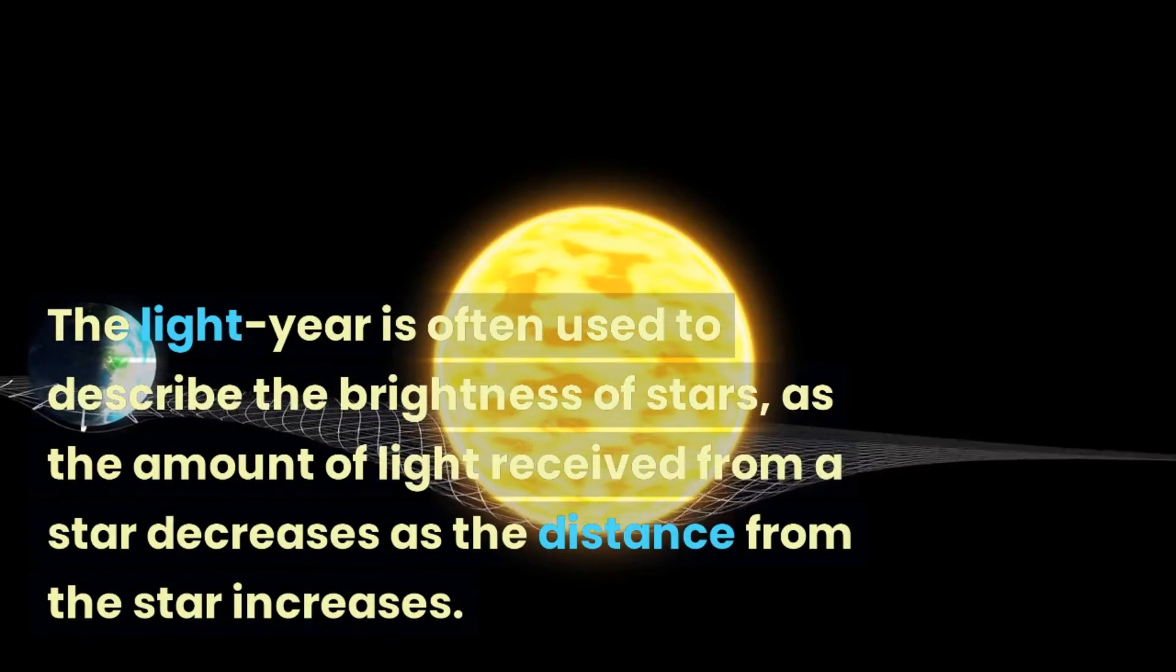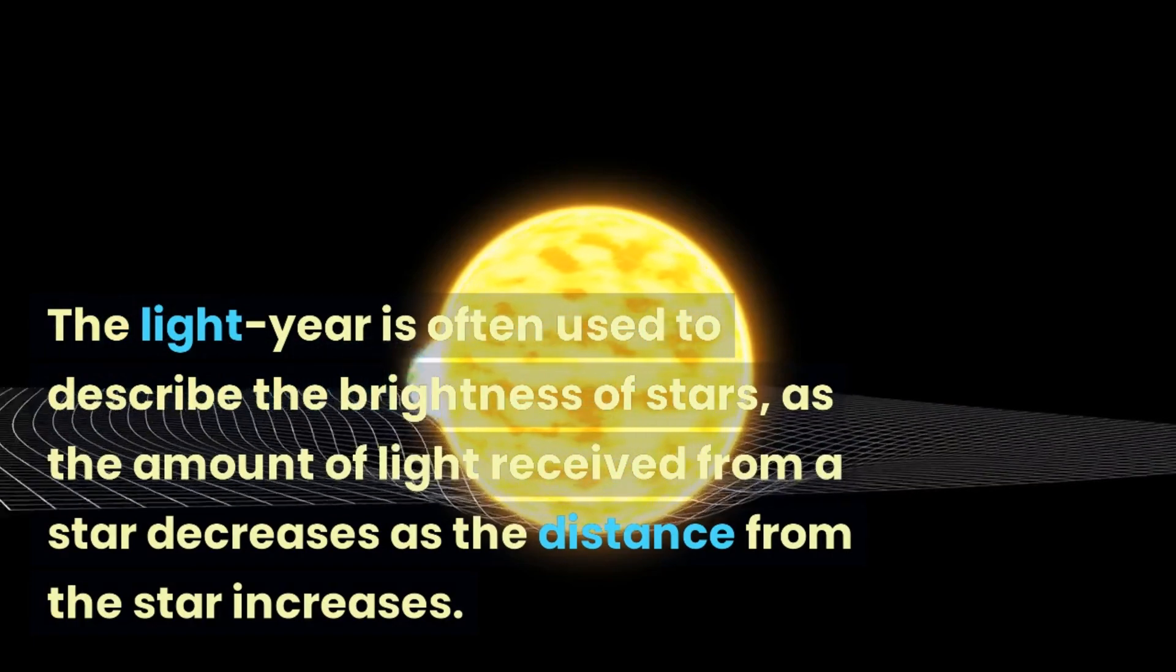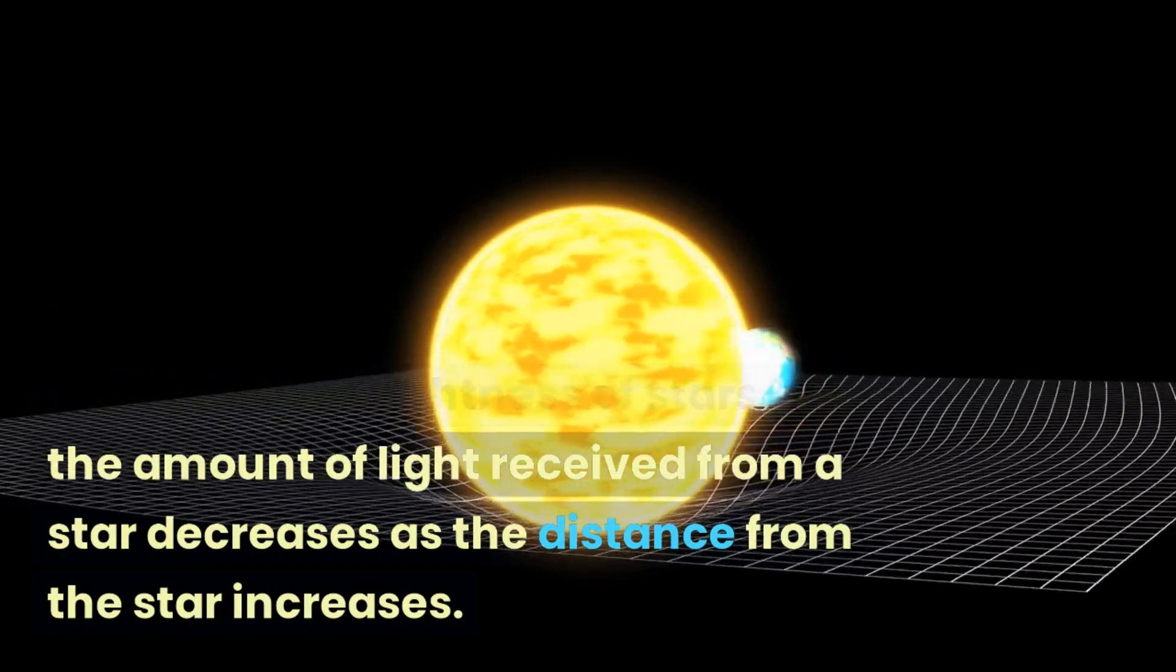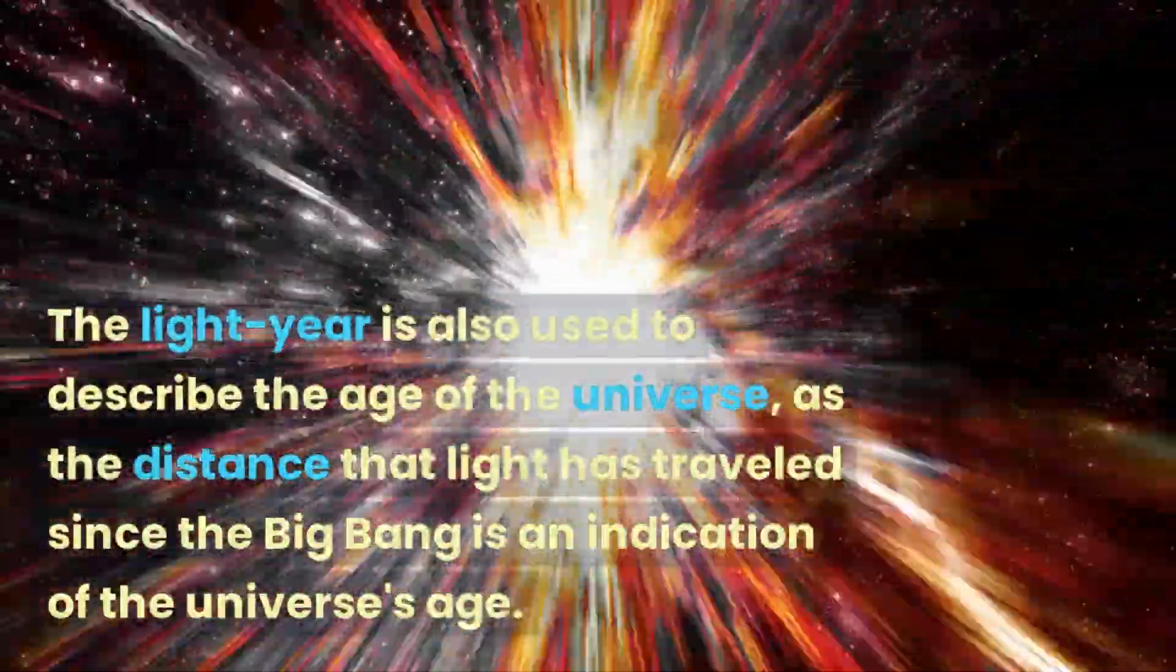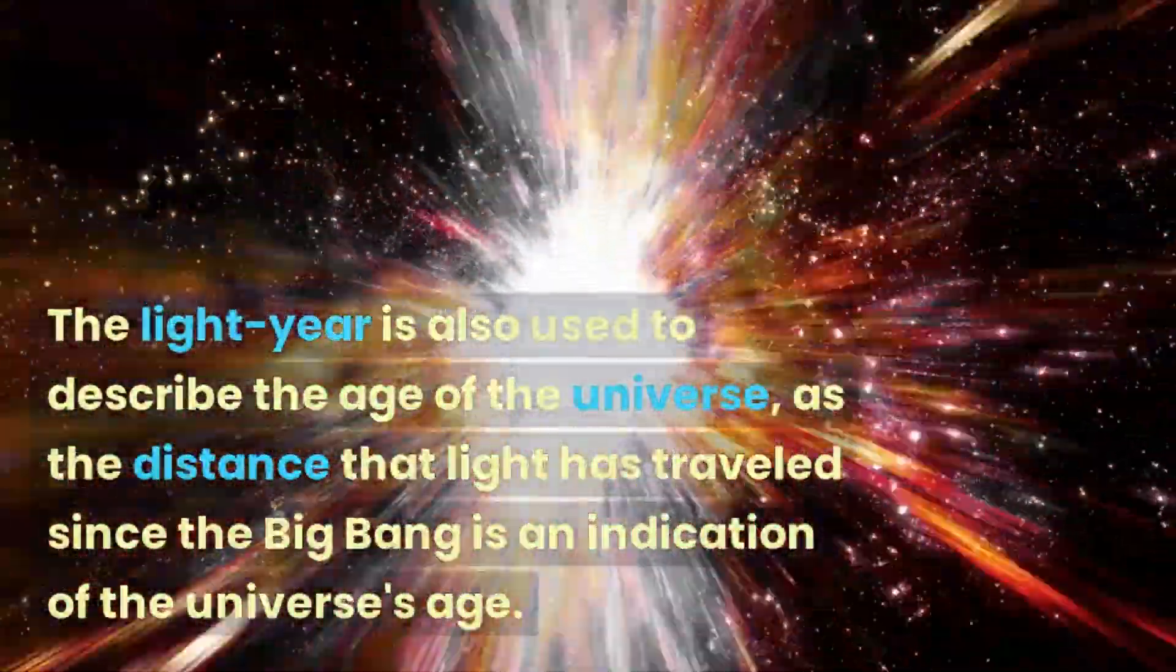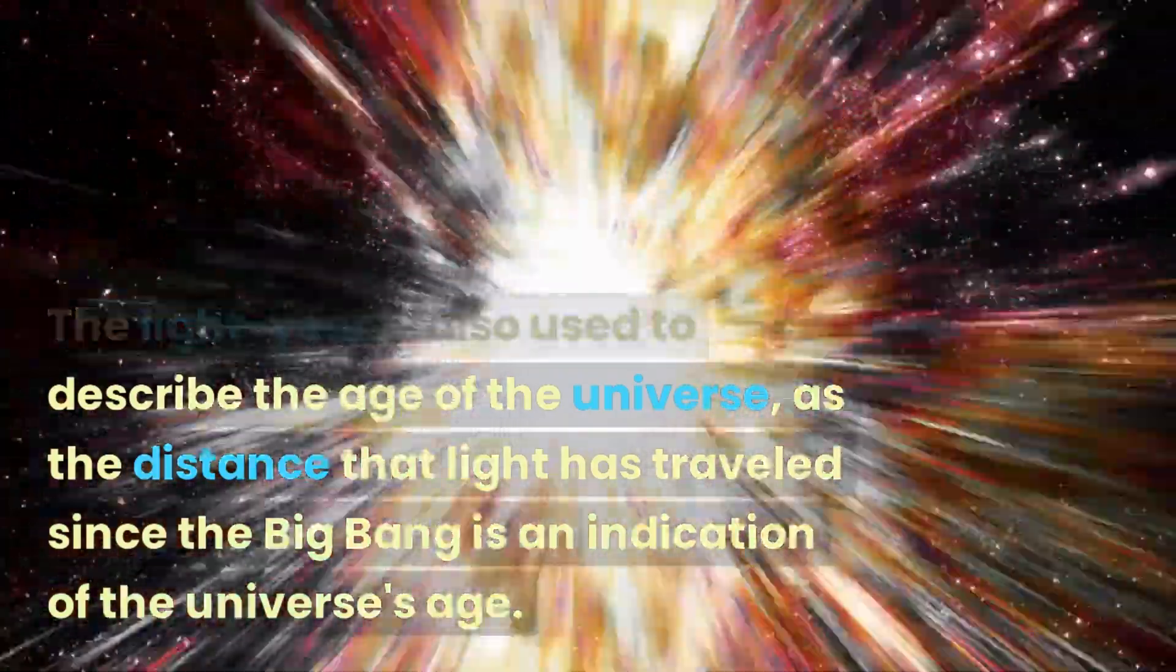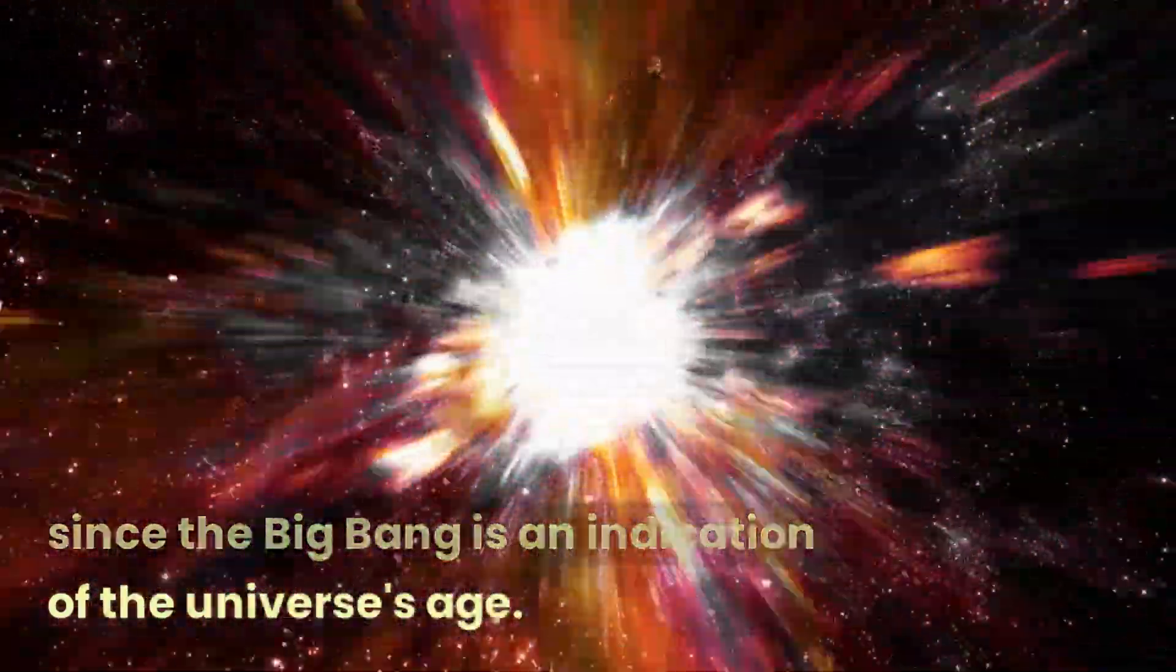The light year is often used to describe the brightness of stars, as the amount of light received from a star decreases as the distance from the star increases. The light year is also used to describe the age of the universe, as the distance that light has traveled since the Big Bang is an indication of the universe's age.